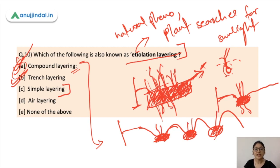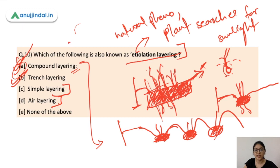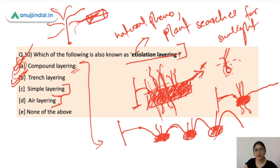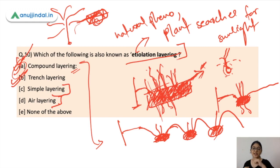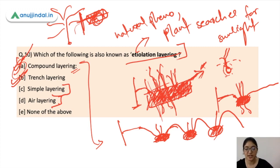Air layering is used when the stem is not flexible enough to bend to the ground, such as with a large guava tree. In air layering, you select a branch, remove the bark from all four sides in a ring, and cover that exposed area with a rooting medium such as sphagnum moss, peat soil, or clay. Then wrap it with plastic foil to retain moisture. Roots develop in that particular area, and once developed, you cut the branch and transplant it as a new sapling. These are the different layering methods, and layering is an asexual method of plant propagation.